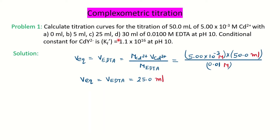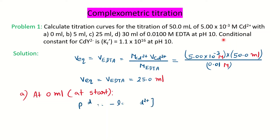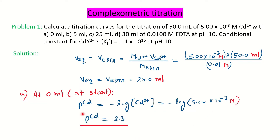At 0 ml — when you haven't added any EDTA — you have a complete solution of 50 ml of 5×10⁻³ molar cadmium, so the same concentration of the metal is used. We'll be calculating p(Cd), which is plotted versus volume of EDTA. p(Cd) = −log[Cd²⁺]. Plugging in the concentration of Cd²⁺, we find p(Cd) = 2.3 at the start.